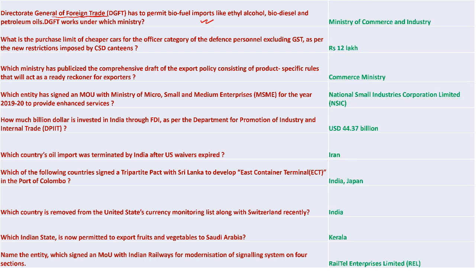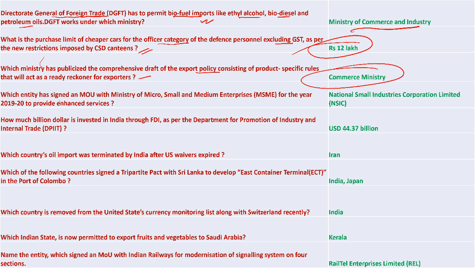The Directorate General of Foreign Trade permitted bio-fuel imports like ethyl alcohol, biodiesel, and petroleum - it works under the Ministry of Commerce and Industry. The purchase limit of a cheaper car for officer category defense personnel, excluding GST, is 12 lakh as per new CSD canteen restrictions. The Commerce Ministry publicized a comprehensive draft of the export policy with food-specific rules. NSIC - National Small Industries Corporation - signed an MOU with the Ministry of MSME for 2019-20 to provide enhanced services. FDI invested in India as per DPIIT is 44.37 billion US dollars.